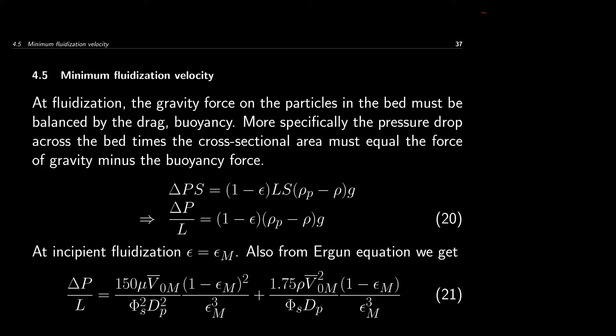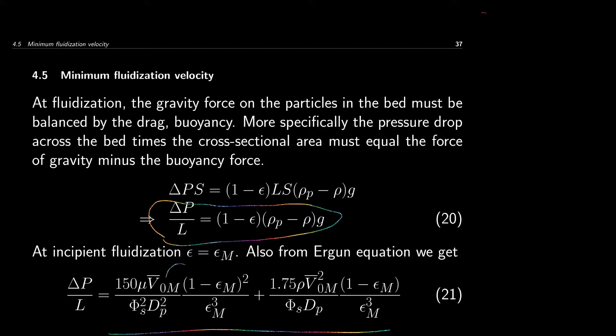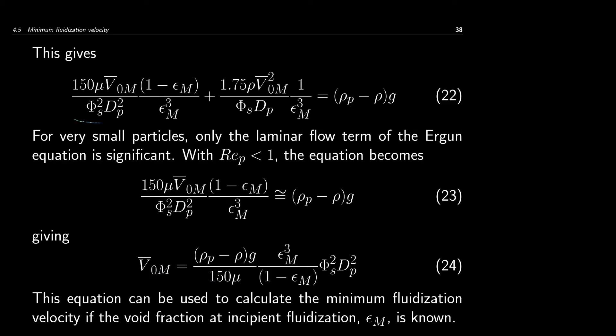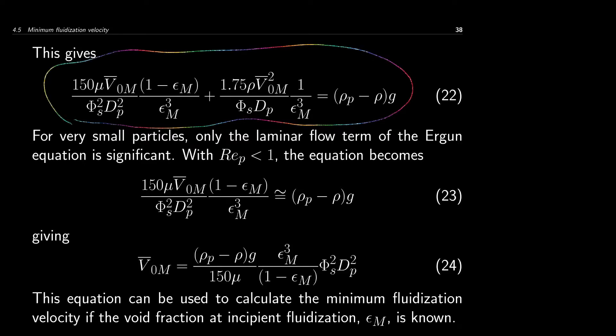The pressure drop remains constant after fluidization begins, so the equation remains valid for the entire range of fluidization. You can write this equation for minimum fluidization velocity. Also, the Ergun equation remains valid for minimum fluidization. In that case, we will use the subscript m for minimum fluidization, where epsilon_m is the void fraction at minimum fluidization.